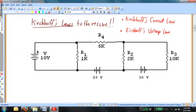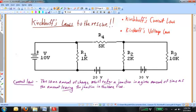The current law says that the same amount of charge must enter a junction in a given time interval as the amount of charge that leaves the junction in the same time interval. This basically says that the current in is equal to the current out, and it's an expression of the law of conservation of charge.